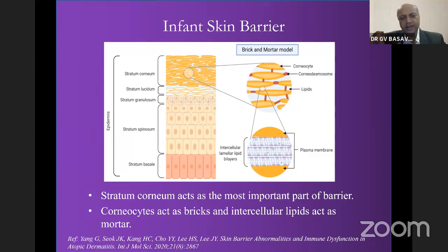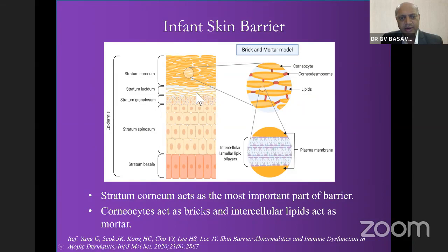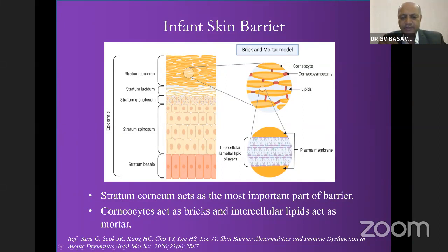This diagram shows what we all write as undergraduates: the skin layer consists of stratum corneum, lucidum, granulosum, spinosum, and stratum basale. But as a barrier and as a pediatrician, what we are concerned with is the stratum corneum, which acts as the most important part of the barrier. It consists of corneocytes, corneodesmosomes, and lipids. Corneocytes act like bricks, and intracellular lipids act like mortar, forming a very good barrier.